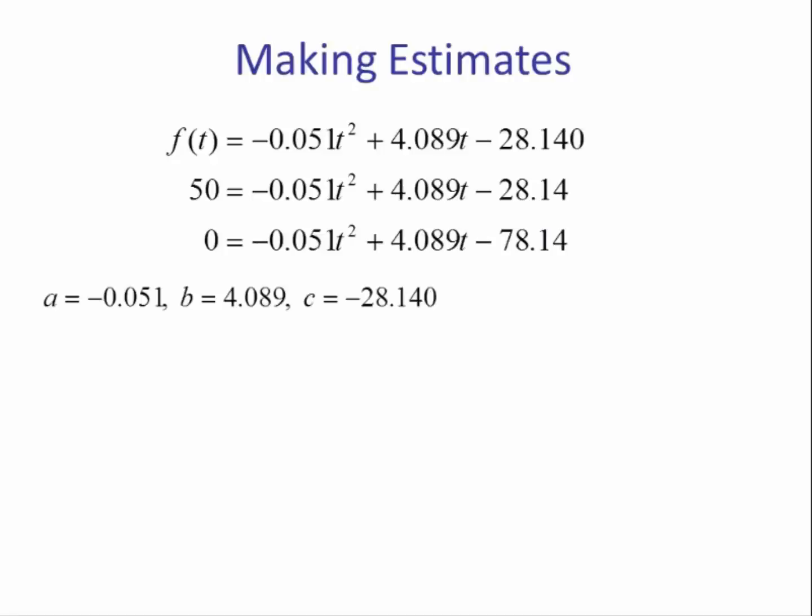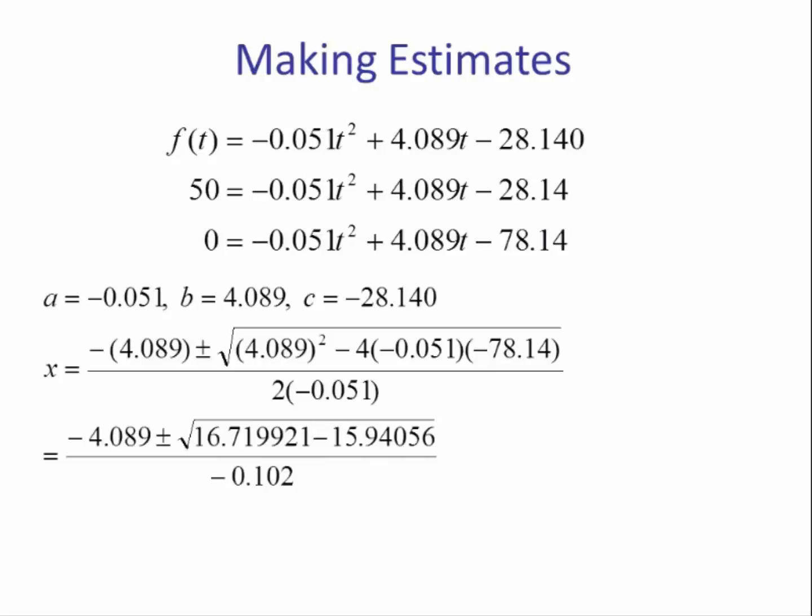a is equal to negative 0.051, b is 4.089, and c is negative 28.14. Plugging these values in the quadratic formula, computing what's inside the radical, we get negative 4.089 plus or minus the square root of 0.779361, all of that is divided by negative 0.102.